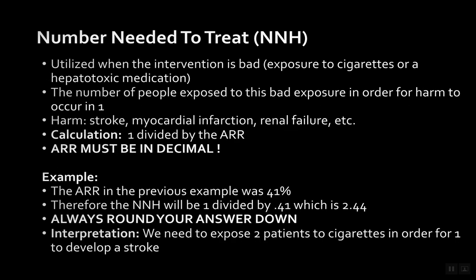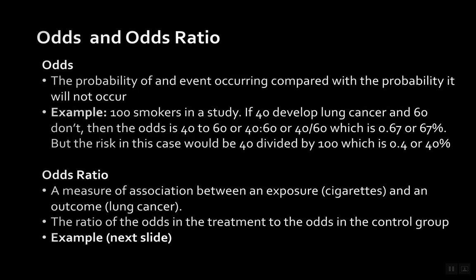Next we have odds and odds ratio. Odds is the probability of an event occurring compared with the probability that it will not. For example, 100 smokers in the study — if 40 develop lung cancer and 60 did not, the odds are 40 to 60: the probability of an event occurring (40 people developing lung cancer) compared to the probability of it not occurring (60 people).